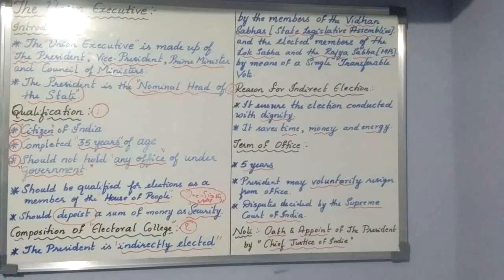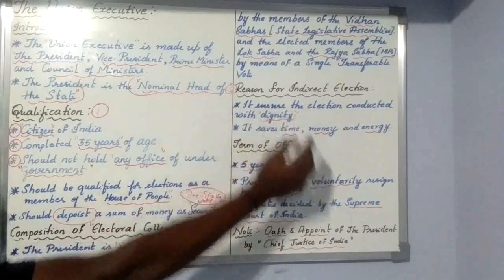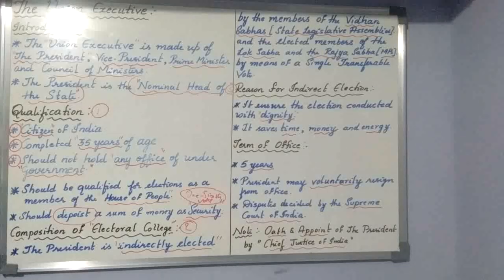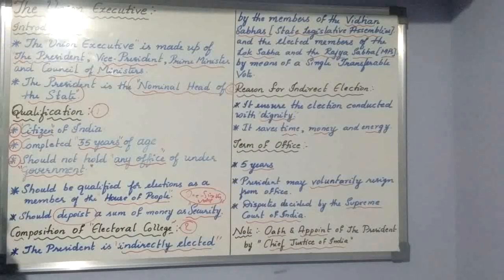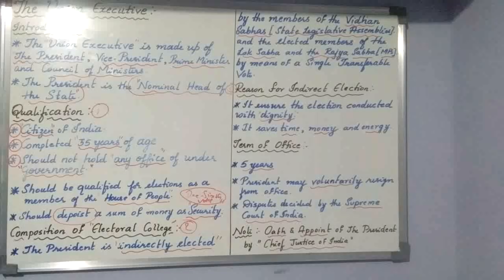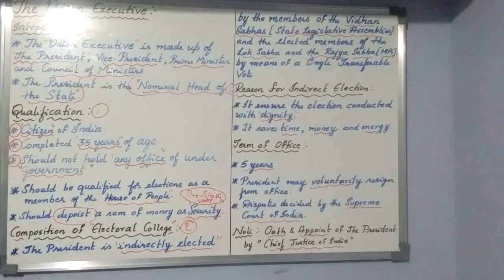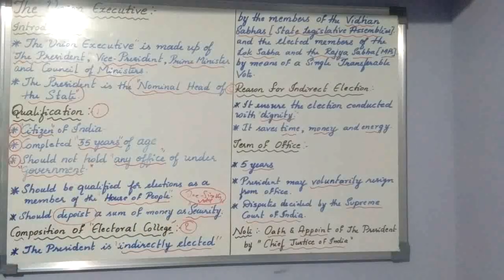So the reasons for the president's election being indirect are: first, to maintain the dignity of the post of the president — he is the top official, and his dignity must be maintained. Second, it saves time, money, and energy. Conducting a direct election like Lok Sabha elections requires a lot of time, energy, and resources. Since that is already done in the general elections, repeating the same procedure for the president would be a waste of time, money, and energy. These two reasons make the president election an indirect election.